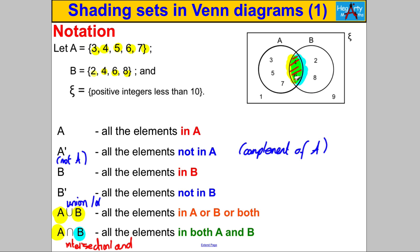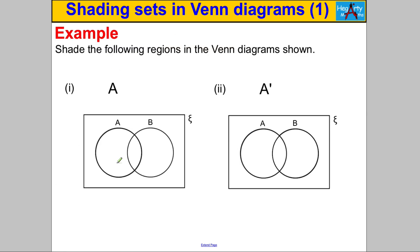Let's try some examples shading the regions using the notation we've just learned. Pause the video and have a go. The first one is A — everything in circle A, clearly just shade everything in A. The next is A complement, or not A — everything outside A, everything inside the rectangle but outside circle A, so you color in the whole area like that to represent not A or A complement.